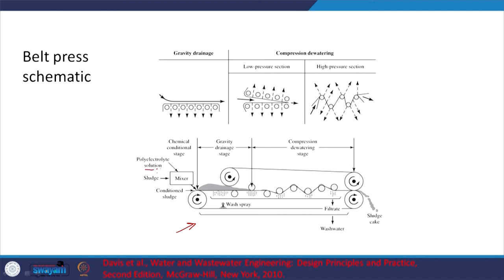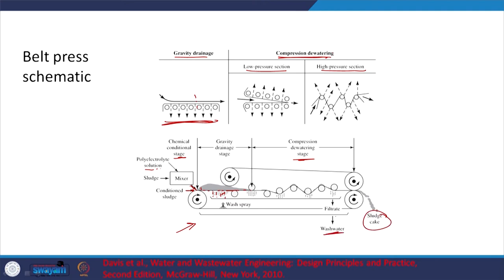In the belt press: chemical conditioning is done first, then the conditioned sludge proceeds. Initially there is gravity drainage where the moisture content is relatively high and water just drains by gravity through the belt. Then we move to compression dewatering — one is a low pressure section and the other is a high pressure section. The final product will be sludge cake and wash water or filtrate.